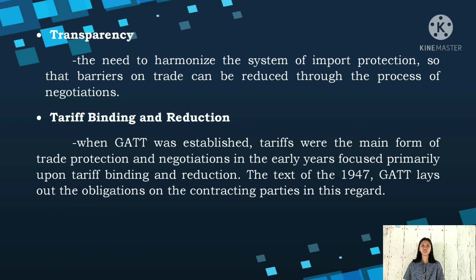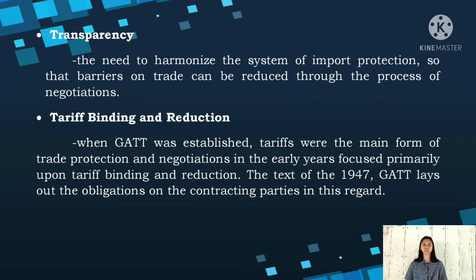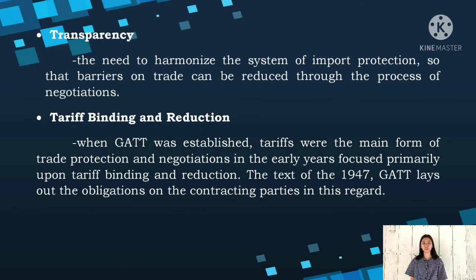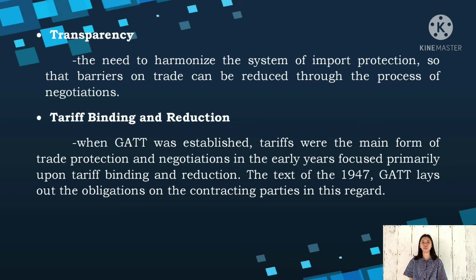Next is transparency: the need to harmonize the system of import protection so that barriers to trade can be reduced through the process of negotiations. Domestic industries should be protected through customs tariffs, and restrictions on trade should be limited to the less rigid tariffs. And lastly, tariff binding and reduction: when GATT was established, tariffs were the main form of trade protection, and negotiations in the early years focused primarily upon tariff binding and reduction. The text of the 1947 GATT lays out the obligations on contracting parties in this regard, intended to correct for unfair trade practices and unexpected changes in trade patterns that are damaging to industries that compete with imports.